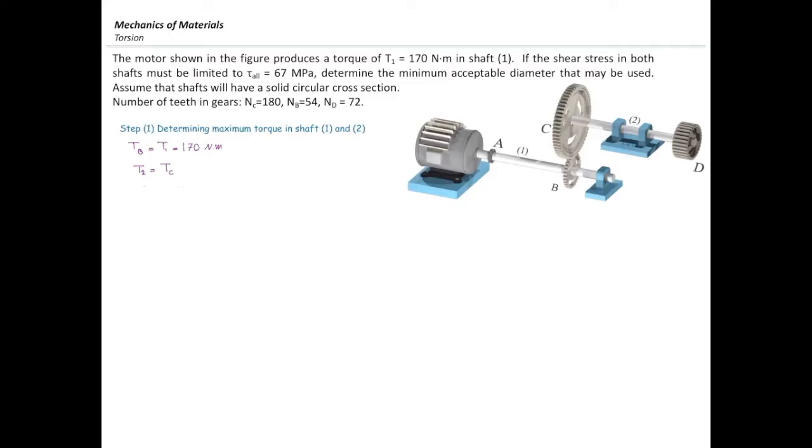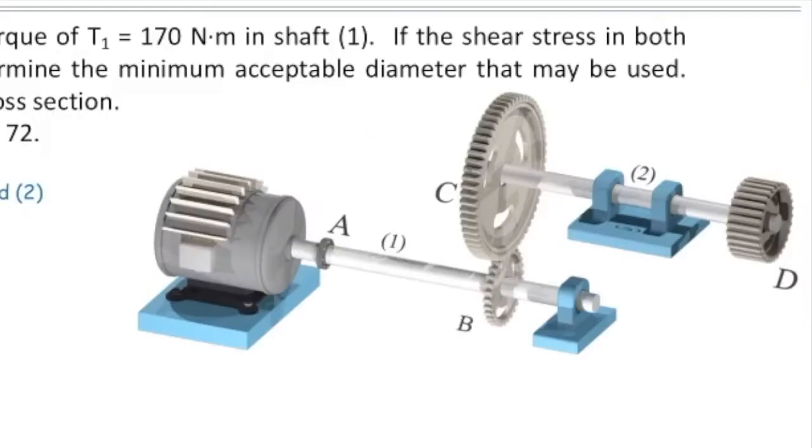Now we can establish a relation between gear C and B. Torque at C would be equal to negative gear ratio multiplied by torque at B because they are connected together, right? TB is known. It's 170. But what is the gear ratio?